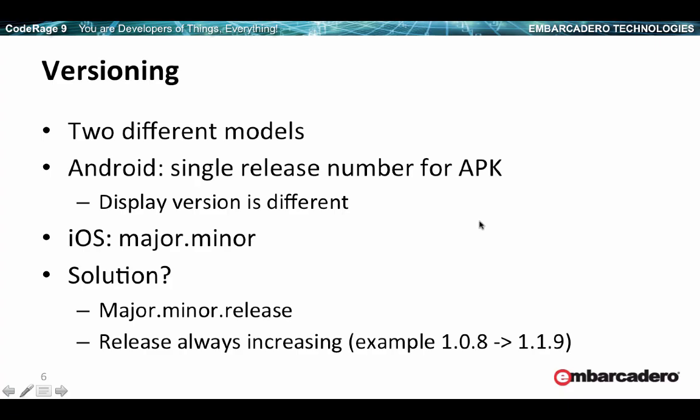A side issue is versioning, because the two worlds have two different models. On Android, what really matters is the release number for the APK — the physical file. They must be in sequence. There is a display version like 1.0, 1.2, 2.0 — that's only for display. The real important thing is to have your release numbers as consecutive — or at least increasing — numbers for the APK release. So you are uploading version 8, 9, 10, 11, 12, and so on.